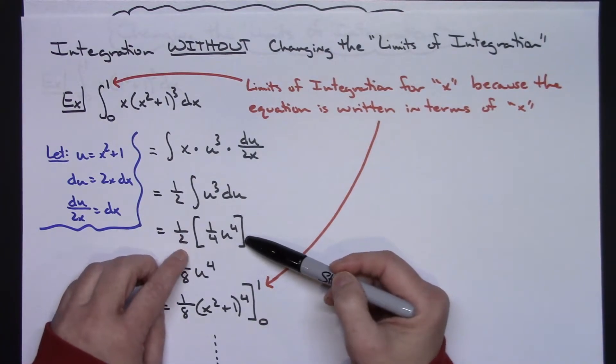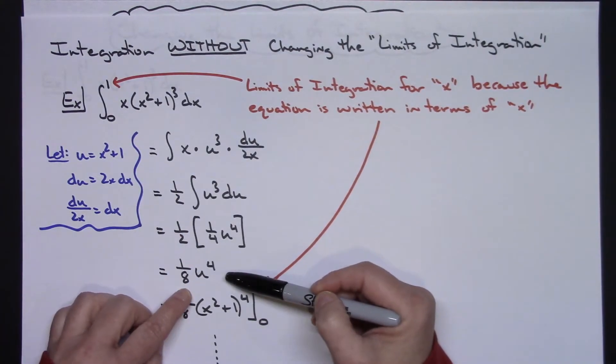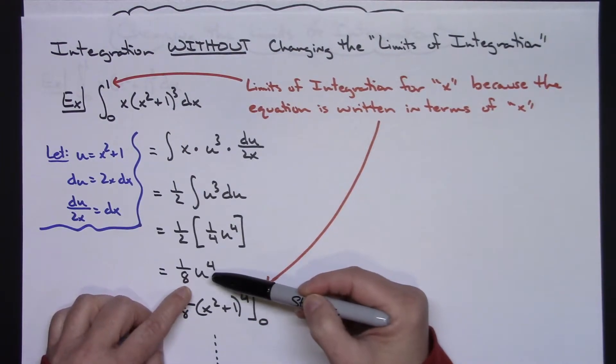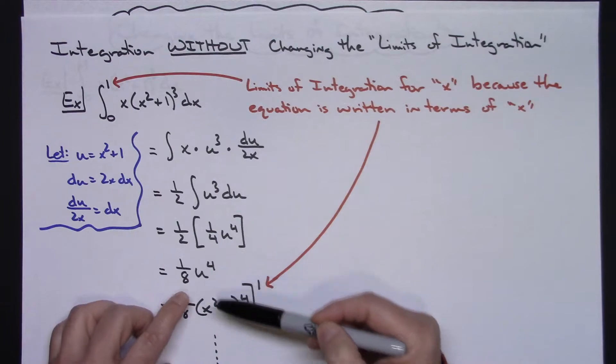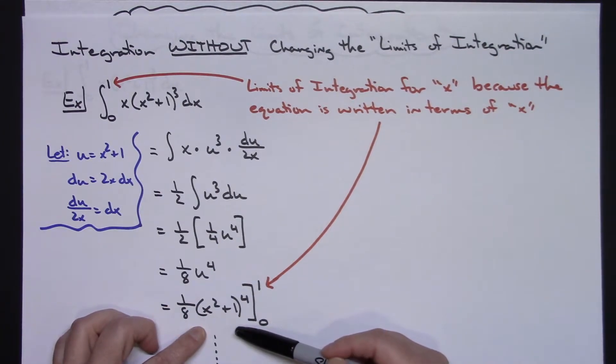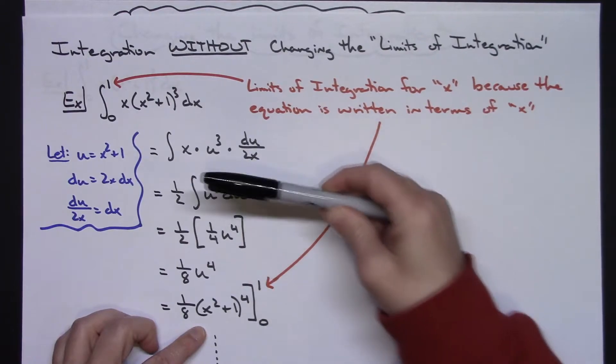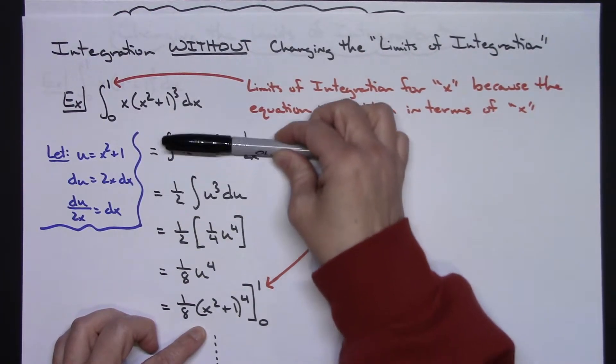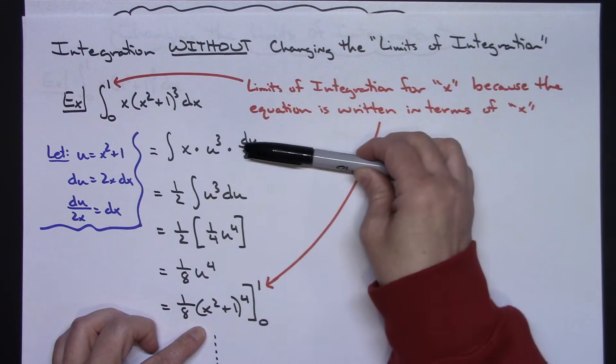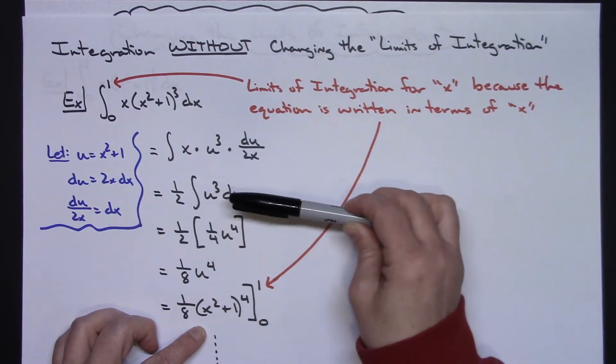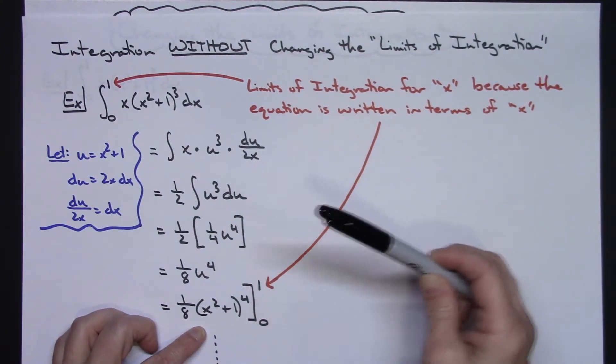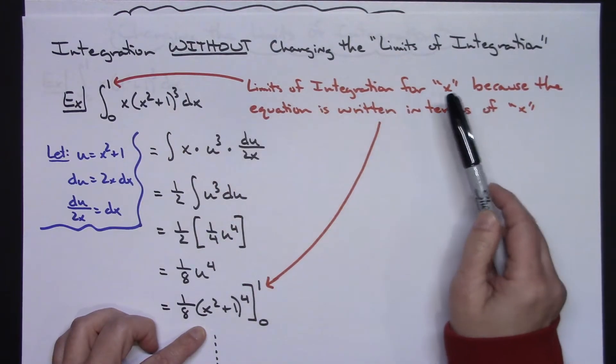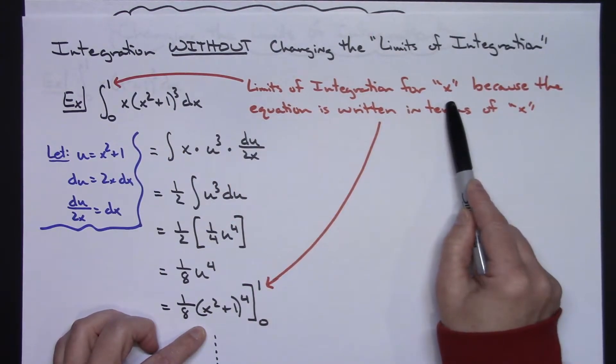So then we would go ahead, integrate that like normal, get down to a simplified version with a u in there. Once we replace u with the x squared plus 1, then I can legally put the 1 and 0 back into the equation. But when I'm messing around with both x's and u's and then just u's right here, you cannot use 0 and 1, because the 0 and 1 in that original equation are limits of integration for x.